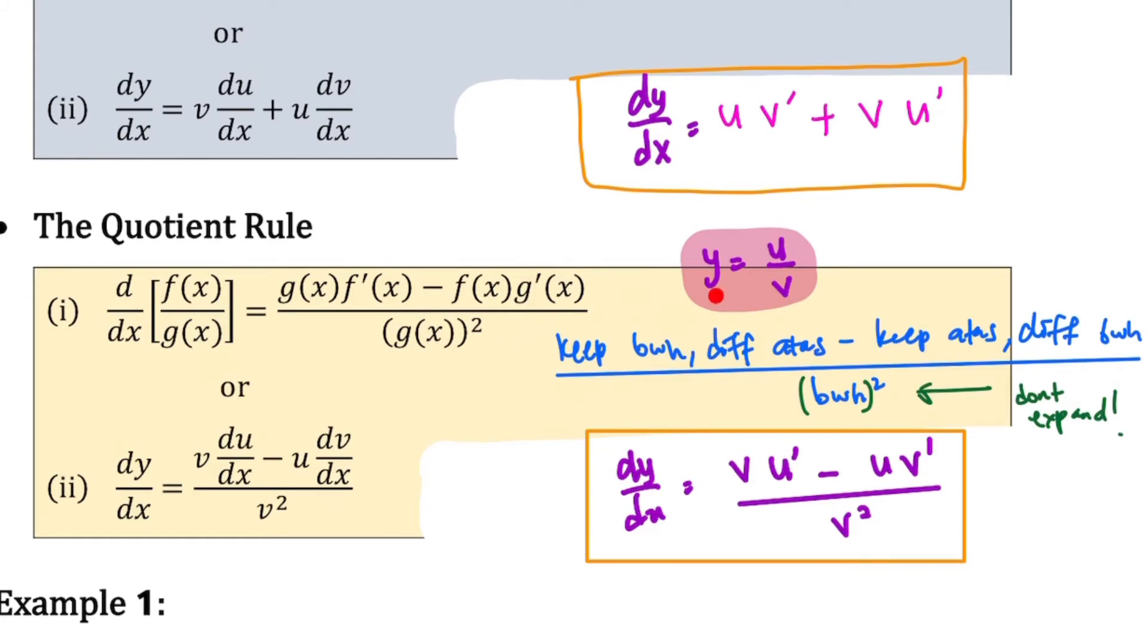So the formula is (v u' minus u v') over v squared.